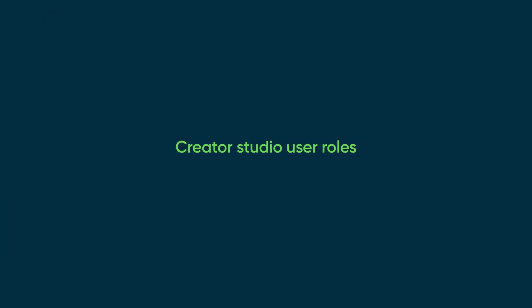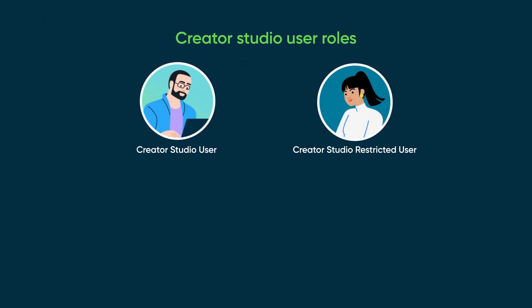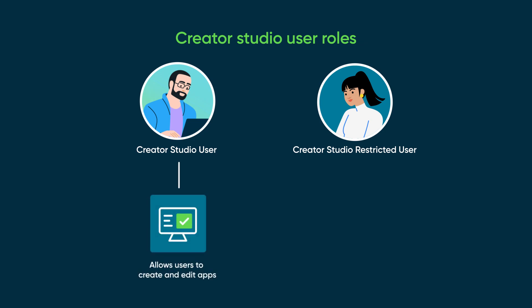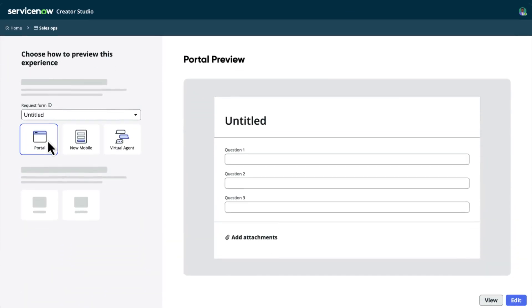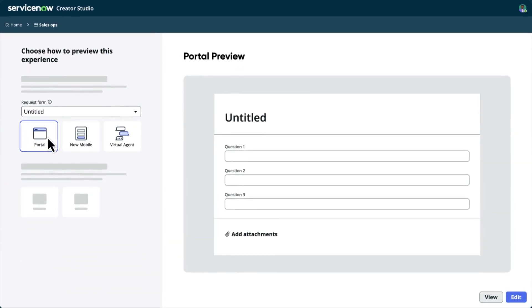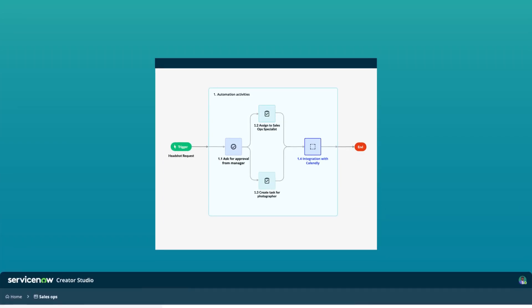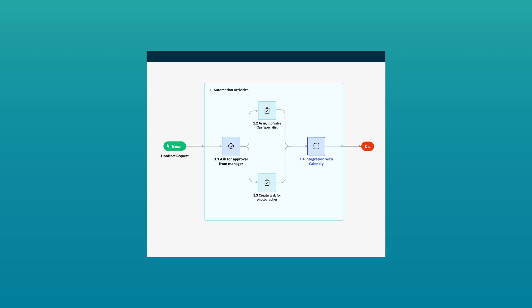In Creator Studio, users may have access to two roles: the Creator Studio user role that allows users to create and edit apps, and the Creator Studio restricted user role, which is for users who shouldn't be able to create apps but still need to edit them. Creator Studio also allows users to preview how their form will look through different experiences, and see visualizations of the data and workflow of their app.